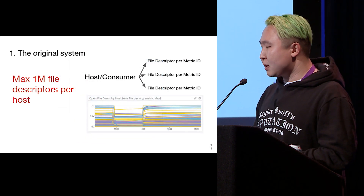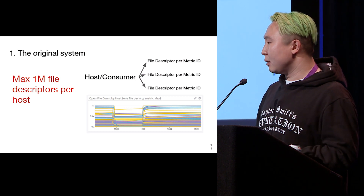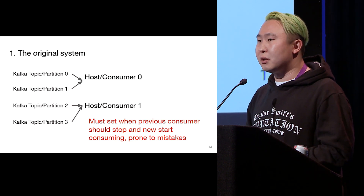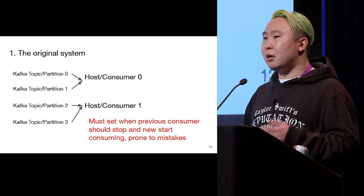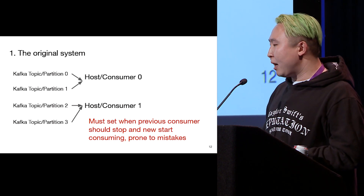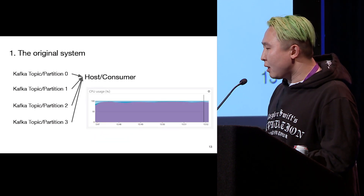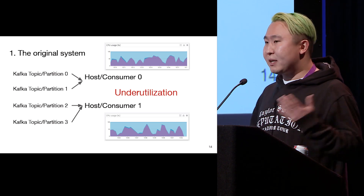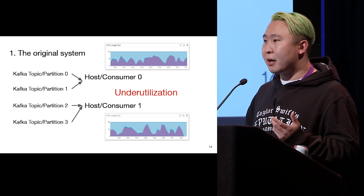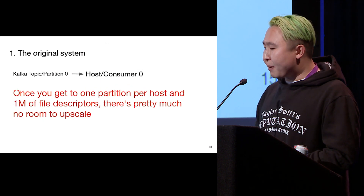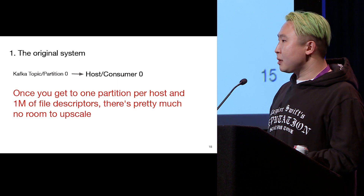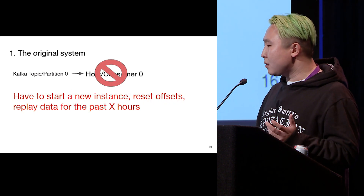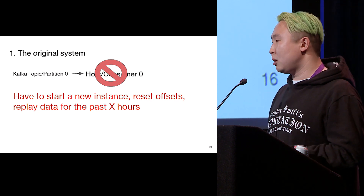The problem with that original system is that one host has a hard limit on the number of file descriptors, which is one million. So once we hit one million file descriptors, we have to split topics and partitions across new hosts and new consumers. For that, we have to set timestamps for when new consumers must start and old ones stop consuming. This manual process is really prone to mistakes. Also, once you have a host with high CPU usage, you split it and end up with a couple of hosts at 50% utilization, paying extra money for resources you won't use until you ramp up. And if your node dies, you have to start a new instance, reset Kafka offsets, replay data for the past X hours — a huge manual process.